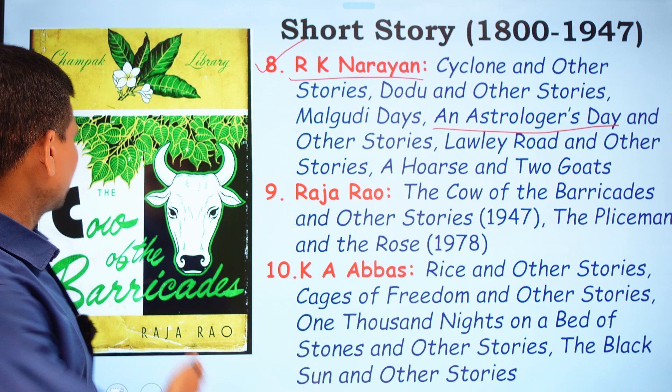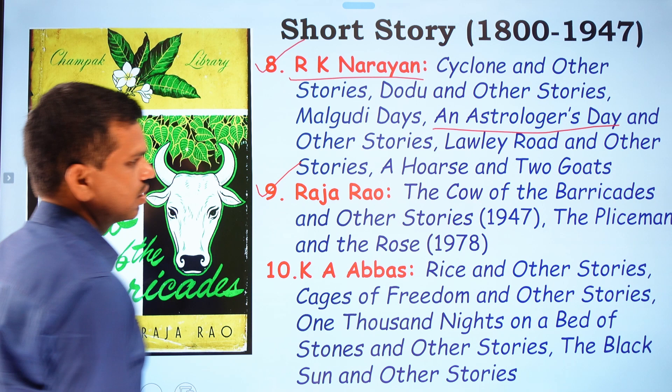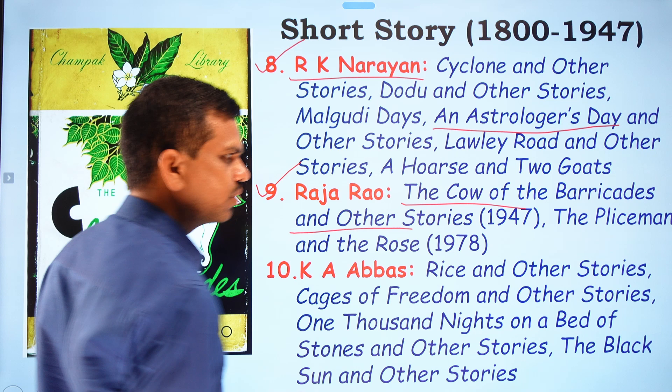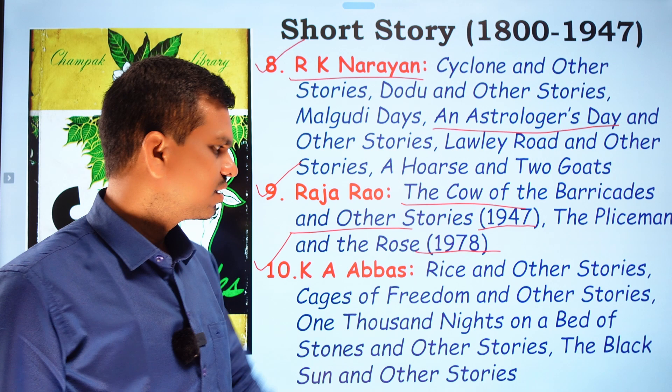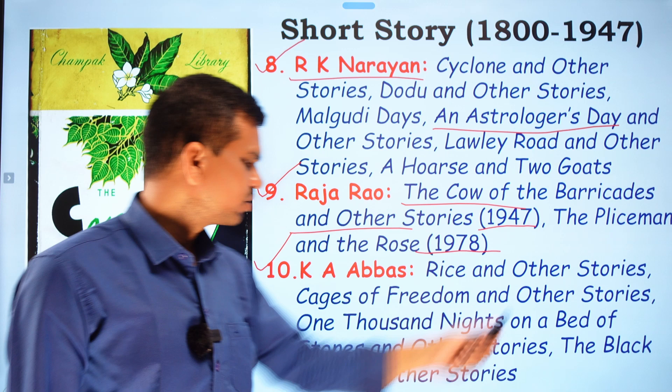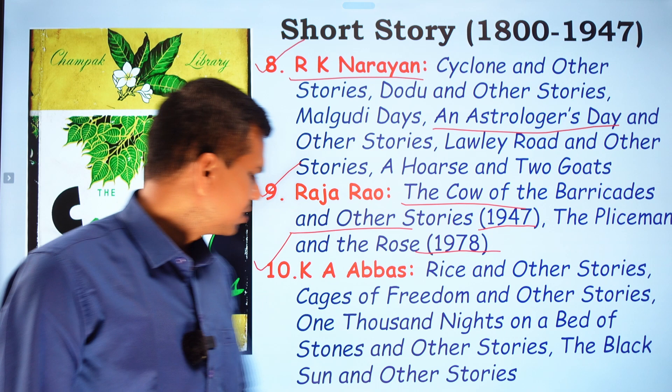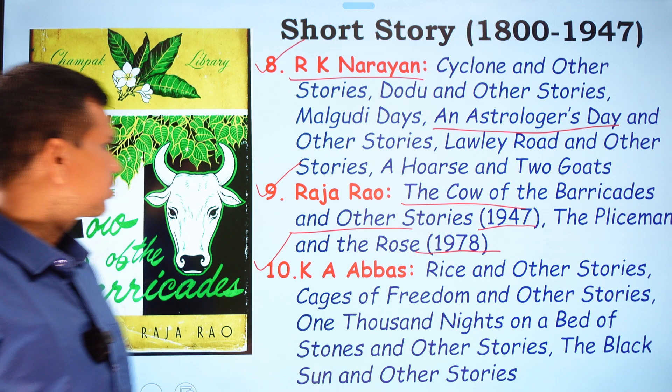Raja Rao contributed The Cow of the Barricades and Other Stories (1947) and The Policeman and the Rose (1978) to the short story genre. K. Abbas wrote collections including Rice and Other Stories, Cages of Freedom and Other Stories, One Thousand Nights on a Bed of Stones and Other Stories, and The Black Sun and Other Stories.